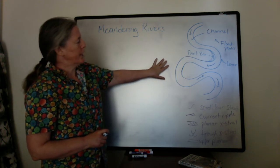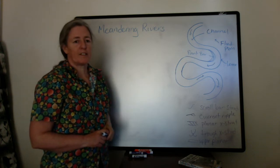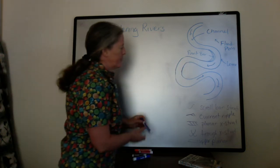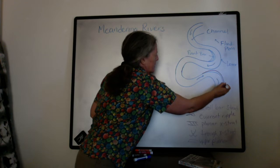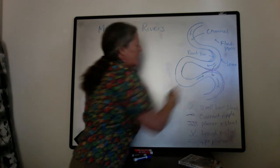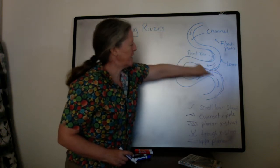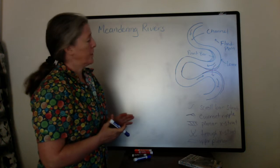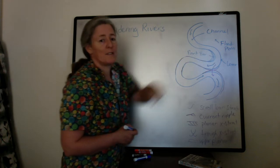As the meandering channel continues to build up bigger and bigger meanders, eventually they run into each other. If we take this diagram, you have erosion on the outside of the bend — both of these bends — and you can lose the entire bank between these two corners and develop a new river channel that cuts off this particular meander. That can happen just with the migration of the meanders, but it's more likely to happen during a flood when you have lots of extra erosion and more momentum in the water.